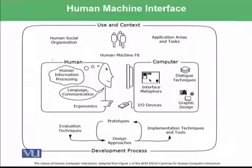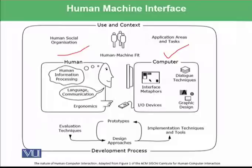Let's look at this with a good example. We have the human on one side and the computer on the other. The human has human information processing, language and communication skills, and ergonomics. The computer has interface metaphors, dialogue techniques, graphic design, and I/O devices. The things built within the computer should be based on the demands of the silicon — the inside of the software. However, the outside of the computer system or software should be built based on the demands of the user.